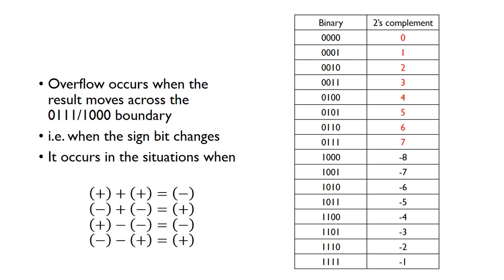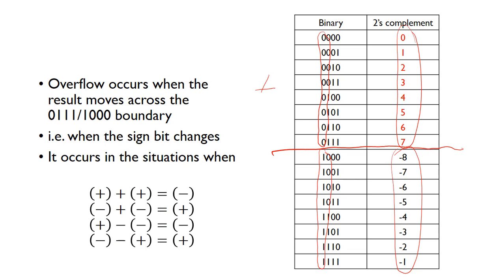We can see that overflow occurs when the result moves across the boundary between 0111 and 1000. Above this boundary we have all the positive numbers zero to seven, and below that we have minus eight to minus one, all the negative numbers. This is caused by the sign bit: for positive numbers the sign bit is zero, and for negative numbers the sign bit is one. So overflow occurs when we cross this boundary — whenever an operation crosses that boundary, overflow will occur.